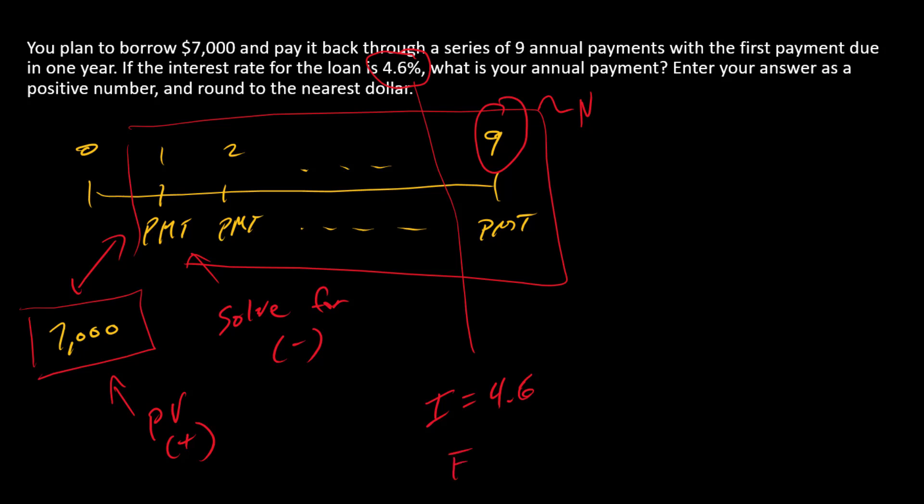And then finally, the calculator wants an FV. Is there an FV here? No. FV is 0. And that's because there are no payments in time 9 other than what's already included in the payment key.